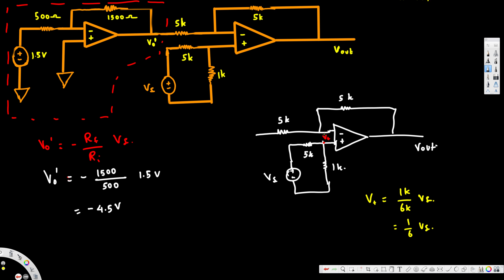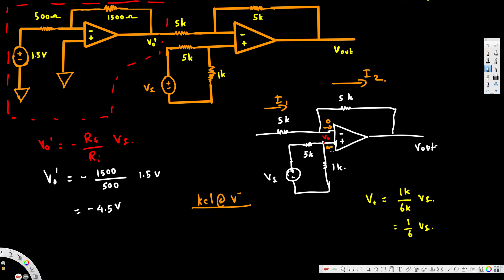V-minus is going to be the same as V-plus, because for an ideal op-amplifier, the voltage across the positive terminal equals the voltage across the negative terminal. So V-minus also equals (1/6) Vs. We then apply KCL at V-minus. Let's call the current flowing in I1 and the current flowing out I2. For an ideal op-amplifier, no current flows through the input terminals, so I1 must equal I2.